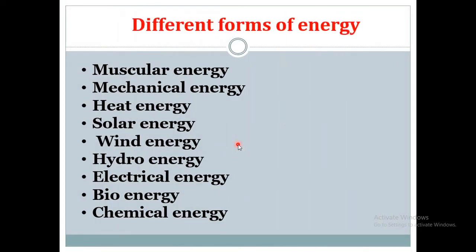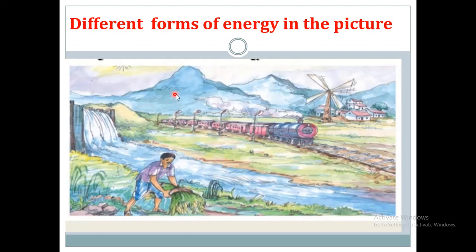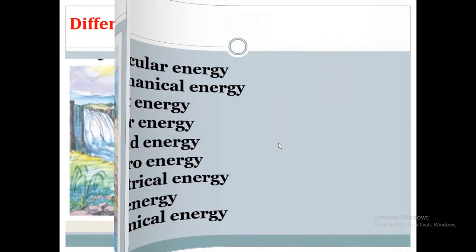In this picture you can see different forms of energy. Sun energy is called solar energy. Not only human beings, but several activities also take place naturally in the environment with the help of energy. Different types of work depend upon their related energy. Sun, air, water, and coal are the sources of energy. Now let us learn about the different forms of energy.